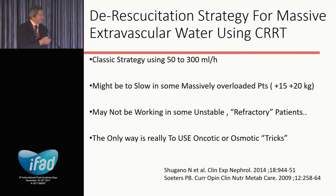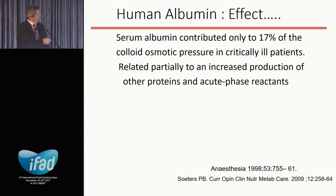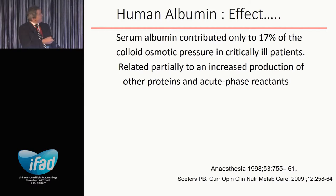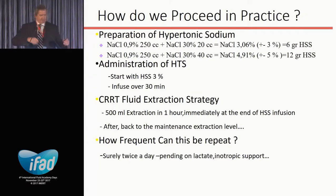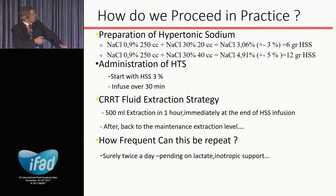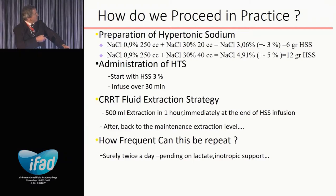...it doesn't work; they become directly hypotensive. Can we do something about this? We can use serum albumin 20-25 percent, but sometimes it is not working, and one of the reasons is that in the critically ill patient serum albumin contributes only 70 percent of the oncotic pressure - because of an increase in acute-phase reactant proteins. When we prepare hypertonic saline solution we use 250 ml of normal saline 0.9% plus 20 ml of normal saline 30%, giving 3% hypertonic saline, which contains about 6 grams of sodium.